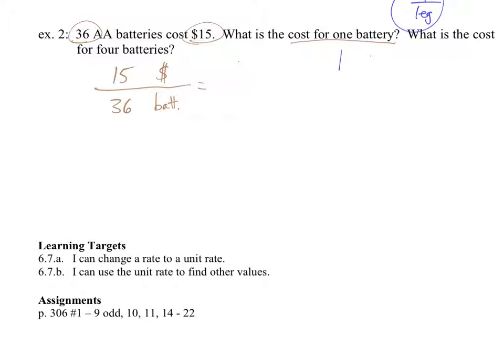So cost for one battery, punch in 15 divided by 36, and we get .42. So it's .42 dollars for every battery. Or 42 cents for every battery. But I'm just going to leave it at the .42. If you wanted to say 42 cents per battery, you could.